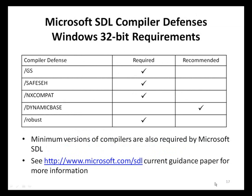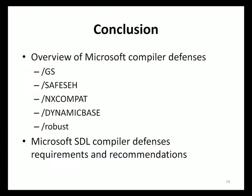For all Windows 32-bit C and C++ applications developed using the Microsoft SDL, the GS, SafeSEH, NXCompat, and robust compiler flags — when applicable — must be enabled. While dynamic base is not currently required by the Microsoft SDL, it is still highly recommended as it can provide an additional layer of defense with very little effort. The Microsoft SDL also has requirements on the minimal compiler versions that must be used, as compiler protection has evolved and greatly improved in later versions. The latest compiler version is always recommended. For details regarding compiler defense requirements for other architectures including minimum compiler version information, please refer to the most current Microsoft SDL guidance paper.